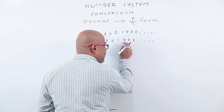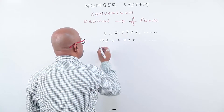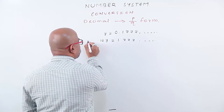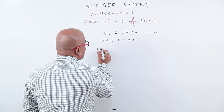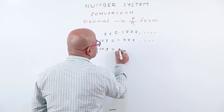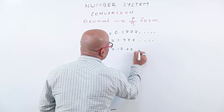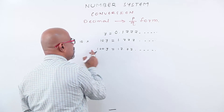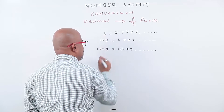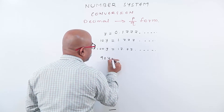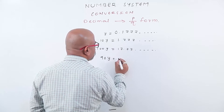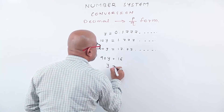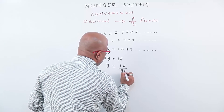Since one number is repeating — one number is recurring — multiply this 10y by 10. We get 100y equals to 17.777 and so on. Now, subtracting the first equation from the second: 100y minus 10y. We get 90y equals to 17 minus 1, which is 16. The 0.777 part gets cancelled.